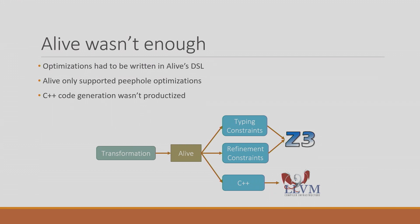There was the Alive tool, but we realized it wasn't enough. First, it could only verify a very small subset of what LLVM can do — just peephole optimizations. We forced people to implement optimizations in a DSL, with a promise of generating C++ code, but we never productized that path. There's a big difference between a prototype for a paper and a production-ready tool that developers around the world can use. So adoption was always limited to a subset of people.